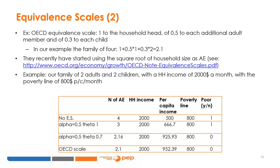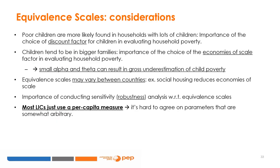In this example, a family of four has a household income of $2,000 a month. The poverty line is evaluated at $800 per capita per month. Depending on the number of adult equivalents, the household members are or are not classified as poor, even though they still have the same income — which would determine their ability to access social assistance. Because there are more children in poor households, the choice of the discount factor for children, alpha, is relevant. Children are also more likely to be found in larger households, so the choice of economies of scale is also important. A small alpha and theta can result in severe underestimation of child poverty.